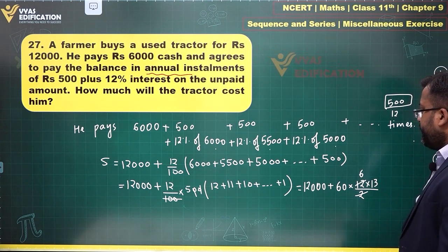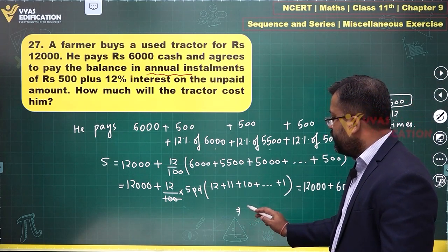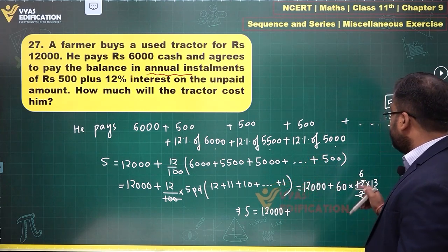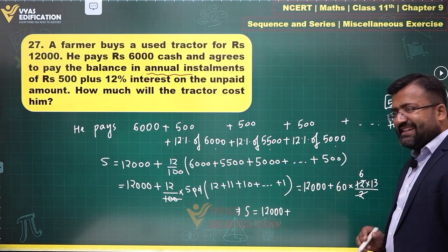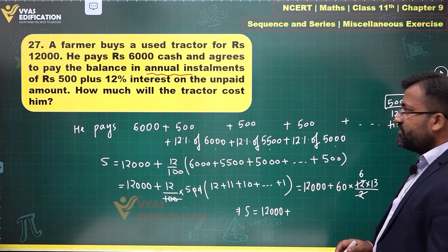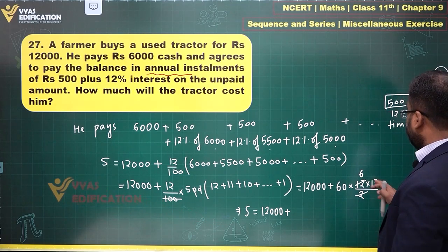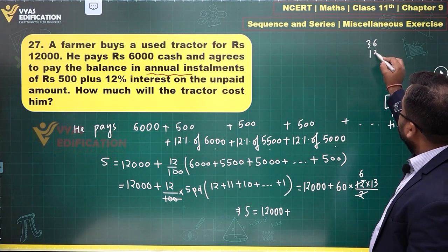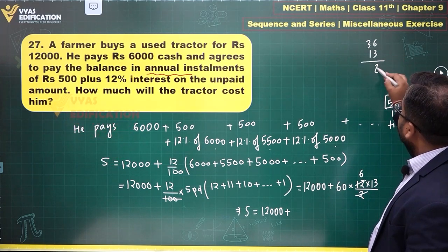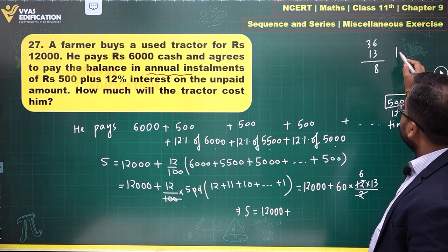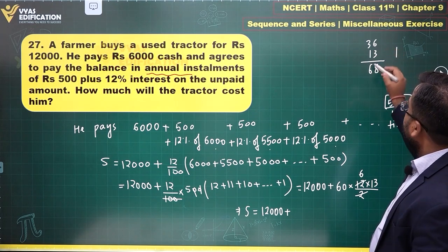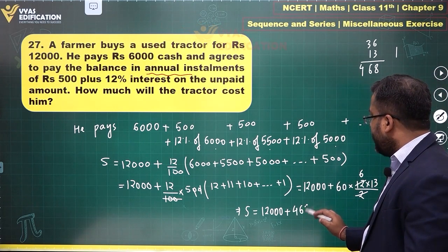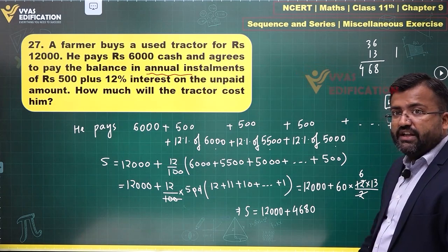This simplifies so that the amount paid S equals 12,000 plus 6 times 78. Computing 36 times 13: 6 × 3 = 18, carry 1; 6 × 1 = 6 plus 3 is 9 plus carry; that gives us 468. So 6 × 78 = 468, and 60 × 78 = 4,680.